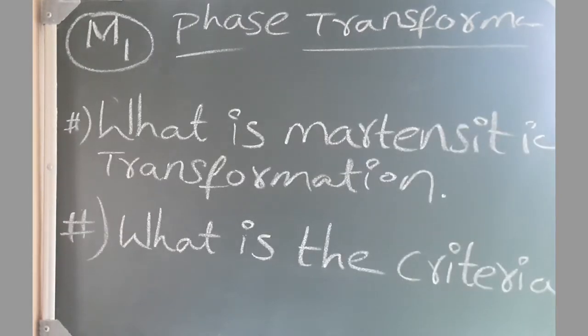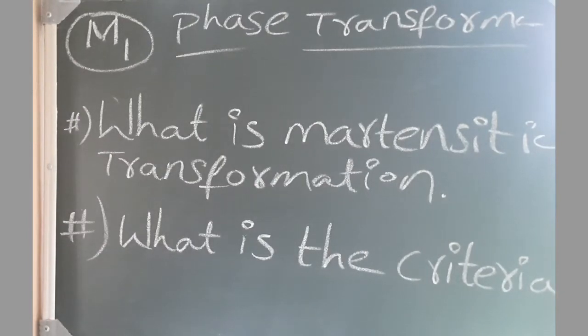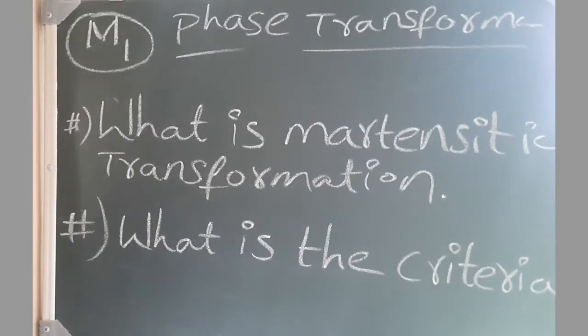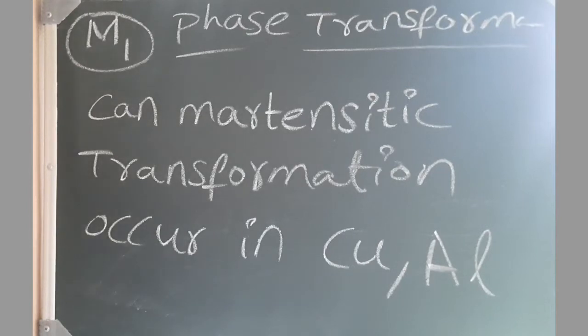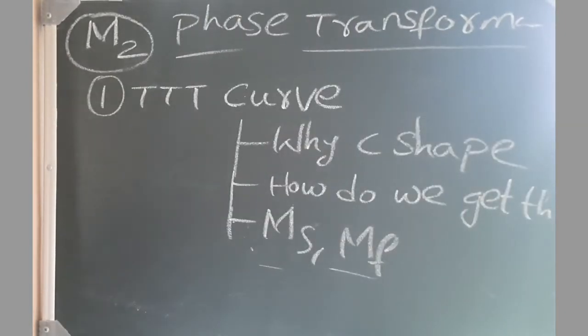Then he moved to what is martensitic transformation and there were a lot of basic questions on this. Then what are the martensites that you are aware of, what is the criteria for martensitic transformation if at all it has to occur in a pure metal, then can martensitic transformation occurring copper and aluminum.